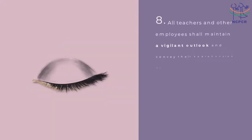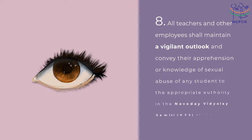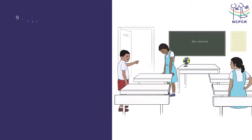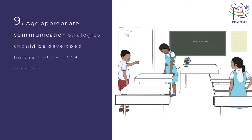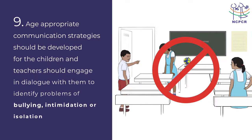8. All teachers and other employees shall maintain a vigilant outlook and convey their apprehension or knowledge of sexual abuse of any student. 9. Age-appropriate communication strategies should be developed for children, and teachers should engage in dialogue with them to identify problems of bullying, intimidation or isolation.